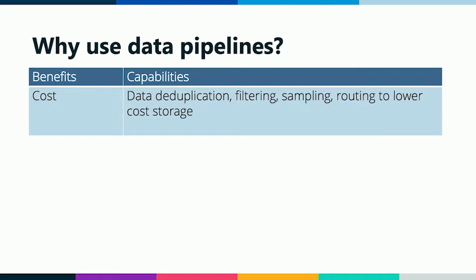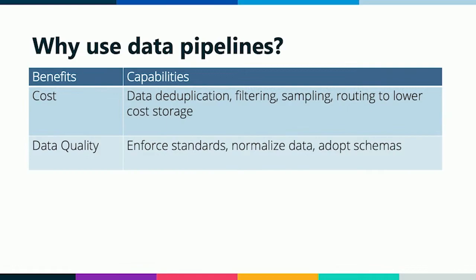We can use a data pipeline to help here. We can deduplicate data, filter out data we don't need, and sample data. Especially with observability, a lot of the signals we get are really repetitive, so let's just get a sampling of what's going on rather than storing it all. We also have the option to route some of our data to lower cost storage options like object stores, which have a lower cost per gigabyte.